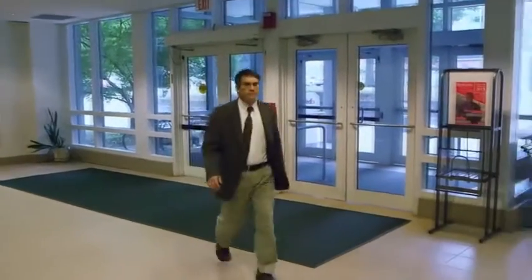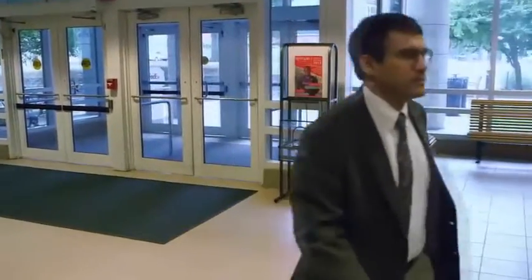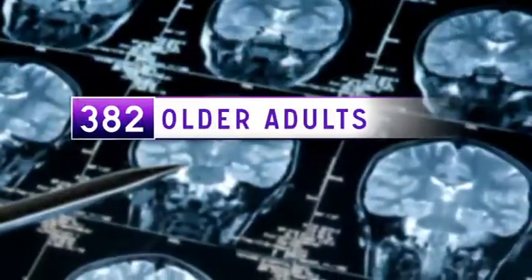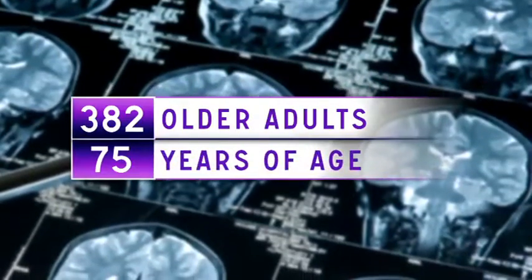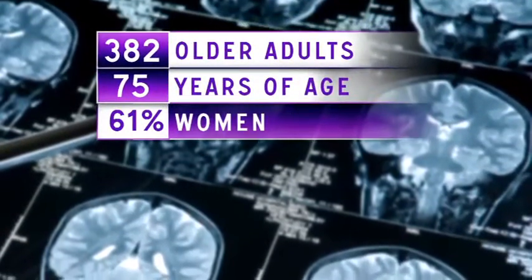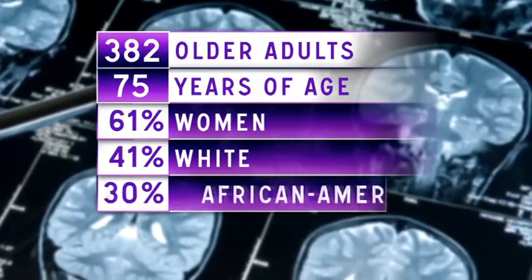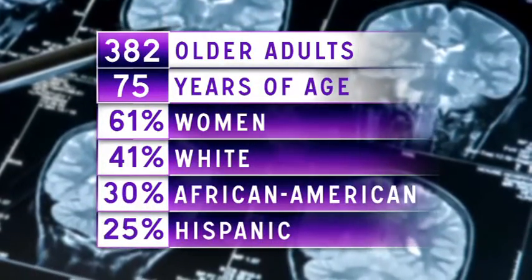Dr. Joshua Miller from Rutgers University, along with colleagues from the University of California Davis, studied 382 older adults with an average age of 75. 61% were women, 41% white, about 30% African American, and 25% Hispanic.